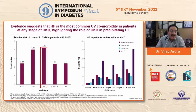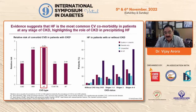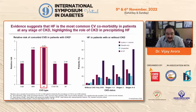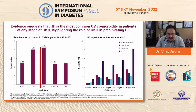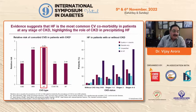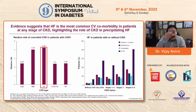From United States real-world data, heart failure is the most common CV comorbidity in patients at any stage of CKD, highlighting the role of CKD in precipitating heart failure. The relative risk equals the prevalence of CVD in CKD patients divided by the prevalence of CVD in non-CKD patients. The relative risk is 4.25 for heart failure, 4.04 for AMI, followed by CAD, CVA, TIA, and AF.